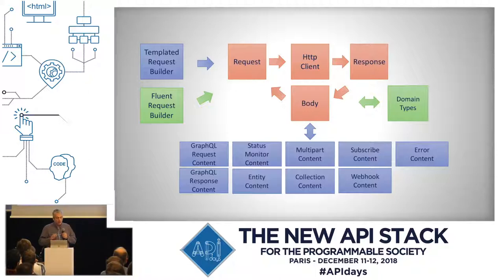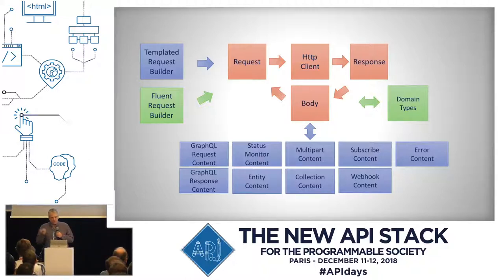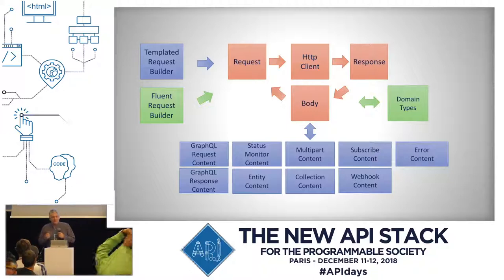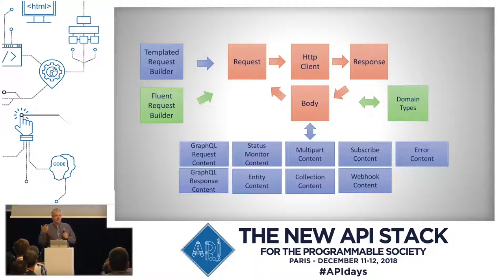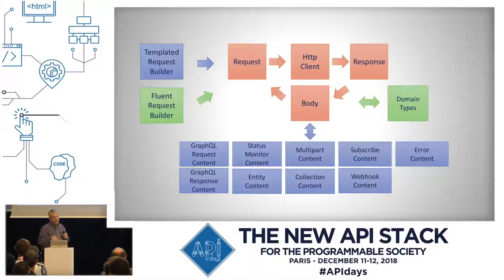Starting with our native library, in some client libraries they actually model the body — whether a request body or a response body — as a distinct type. Sometimes it's just a stream, an array of bytes, or a string. But there's value in adding additional semantics to the payload you're sending over the wire. When you're building an API, there are a lot of common concepts you can implement: error content, web hook subscriptions, collection contents — there are even standardized media types for transferring collections. For single entities you can have standard things, and status monitors for long-running operations. There's no reason why you can't make these as reusable classes. And of course, we can code-gen the model types, because we don't want to have to rebuild all of that.